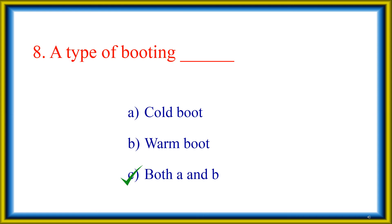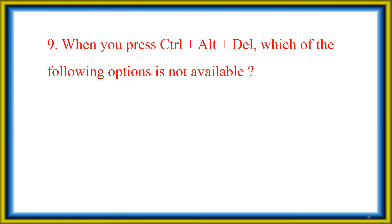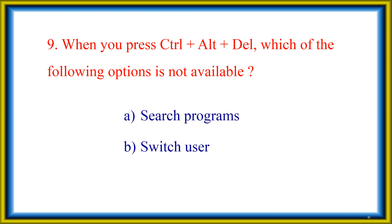The eighth question: when you press Ctrl + Alt + Del — that is Delete — which of the following options is not available? Option A: Search Programs. Option B: Switch User. Option C: Shutdown. The answer is Switch User.